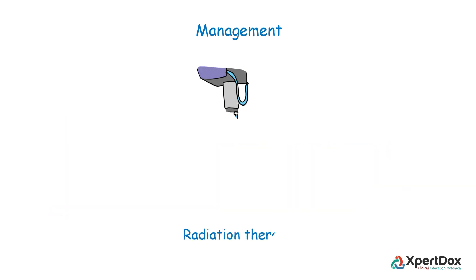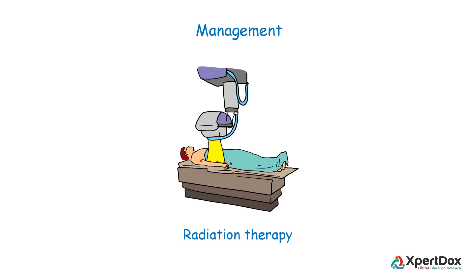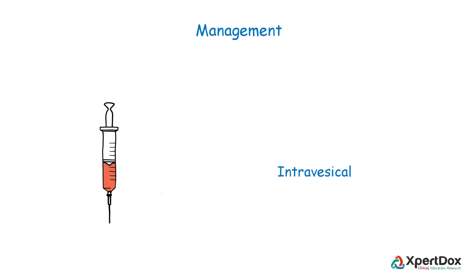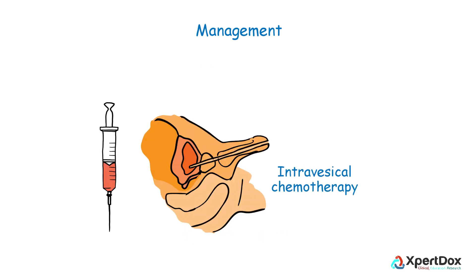Radiation therapy uses high-energy x-rays or other types of radiation to kill cancer cells or keep them from growing. In intravesical chemotherapy, the chemo drug is put directly into the bladder, and this type of chemo is used for very early-stage bladder cancers.